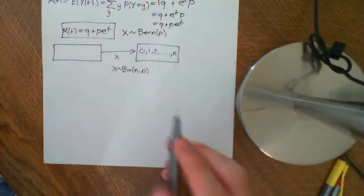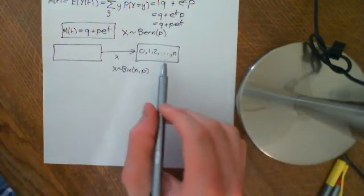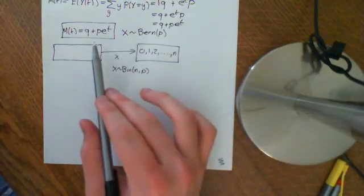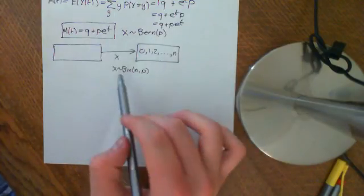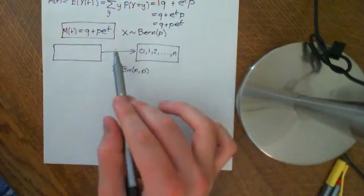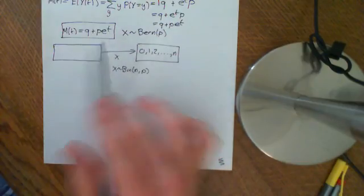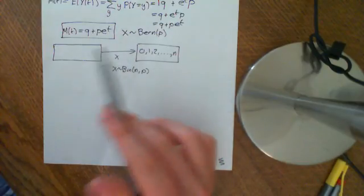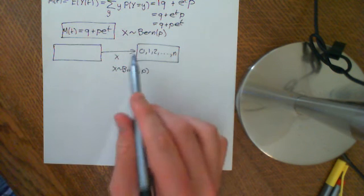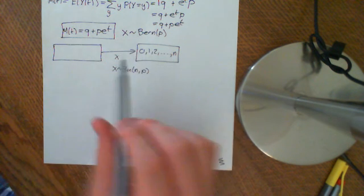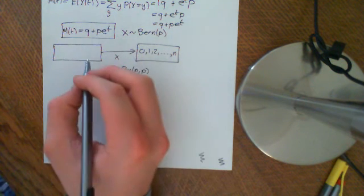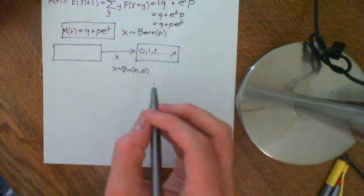We could do it directly from the definition, but it's far better to think of the binomial distribution in terms of a sum of Bernoulli distributions. The task becomes far easier if you think of it in those terms than if you try to handle the messy sum you're going to get if you proceed directly.